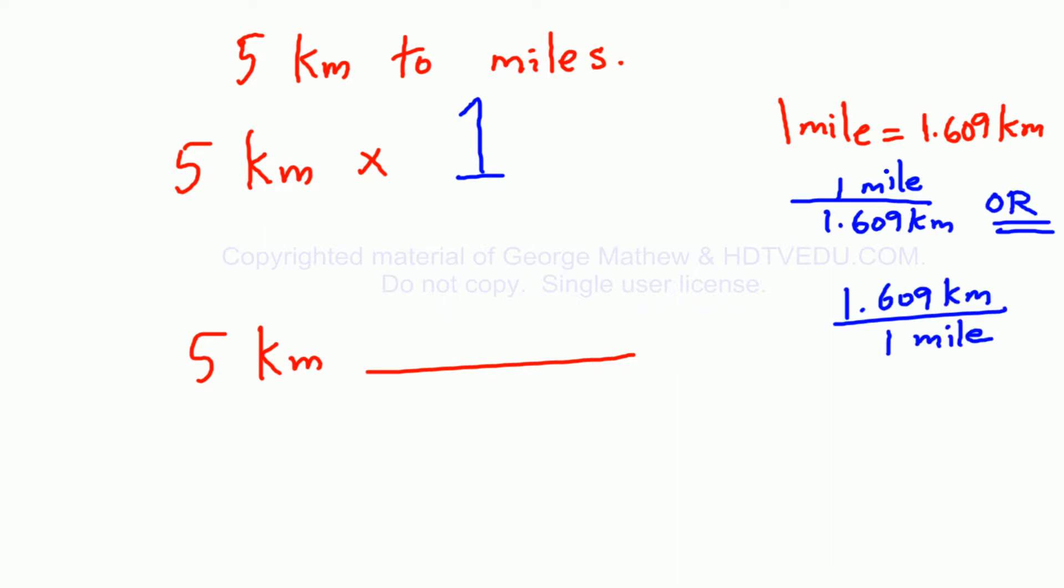You want to get rid of kilometers, so you put the kilometers at the bottom. 1.609 kilometers is 1 mile. So this is 5 kilometers times 1 mile divided by 1.609 kilometers.